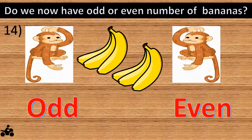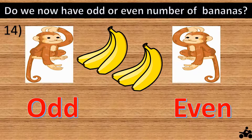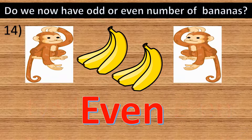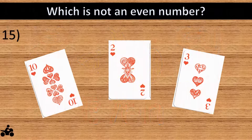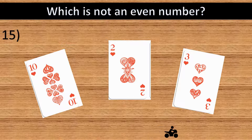Question number fourteen: do we now have an odd or even number of bananas? The answer is even — both monkeys will be happy. Question number fifteen: which is not an even number? The answer is three.